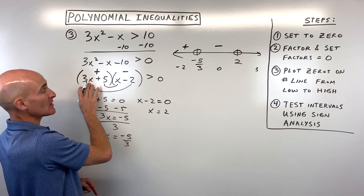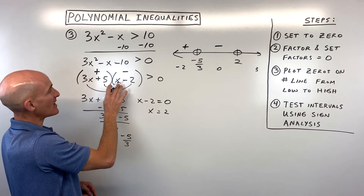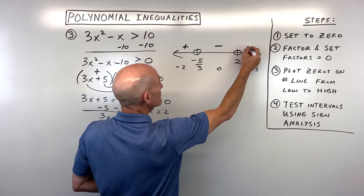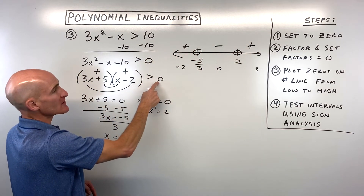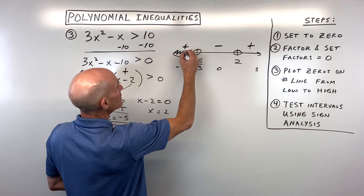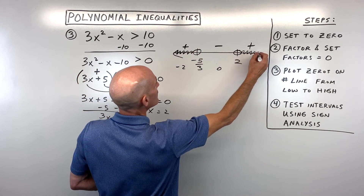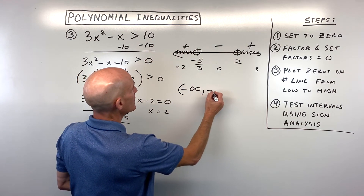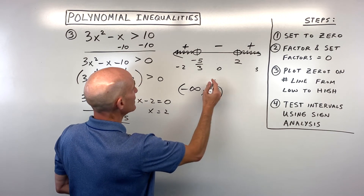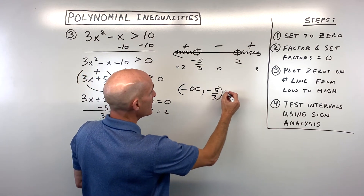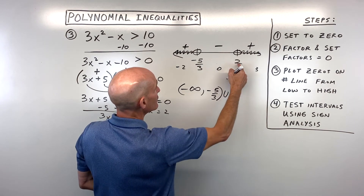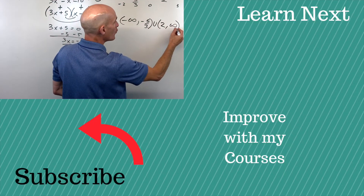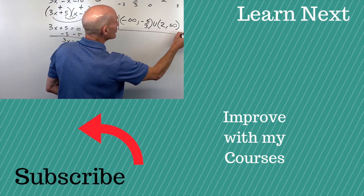Testing 0: 3 times 0 plus 5 is 5 (positive), and 0 minus 2 is negative 2 (negative). Positive times negative is negative. Testing 3: 3 times 3 plus 5 is 14 (positive), and 3 minus 2 is 1 (positive). Positive times positive is positive. We want where it's greater than 0 — the first and third intervals. In interval notation: negative infinity to negative 5 thirds (open), union 2 to positive infinity (open), since you can never reach infinity.